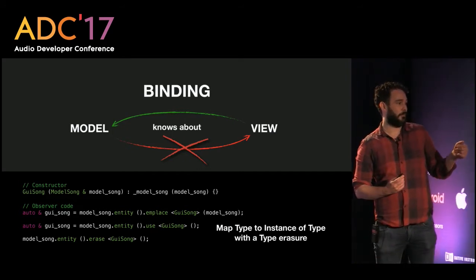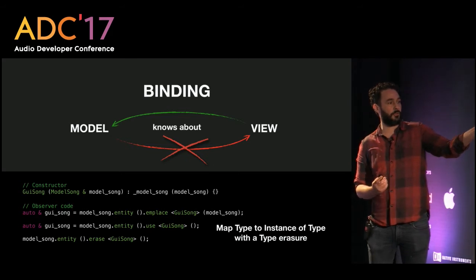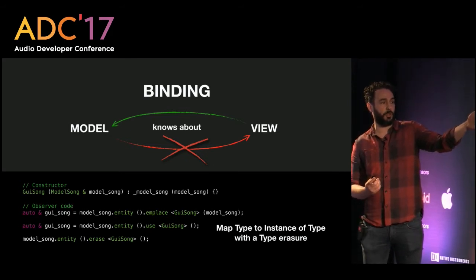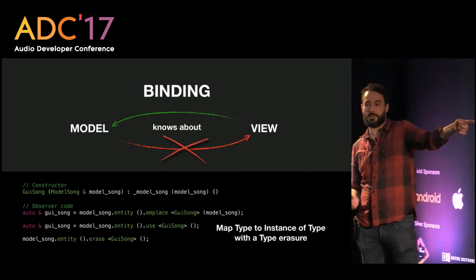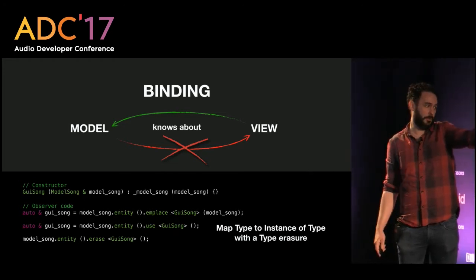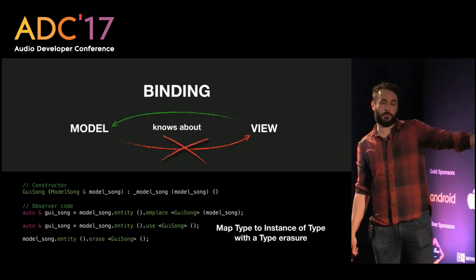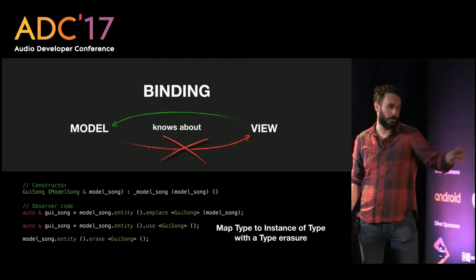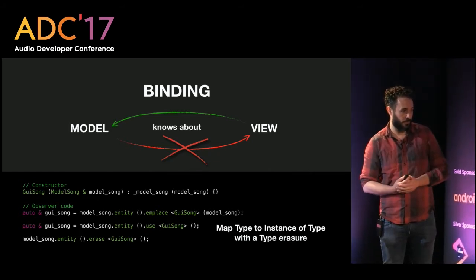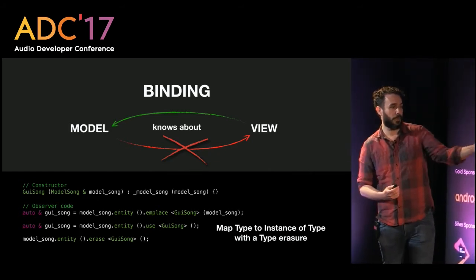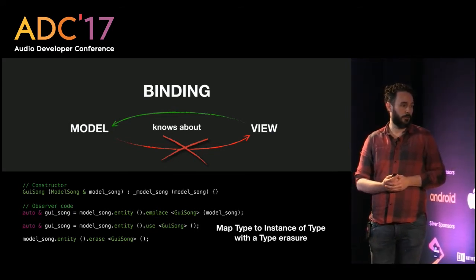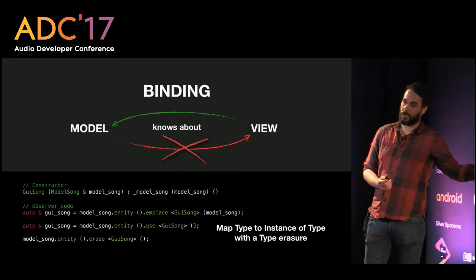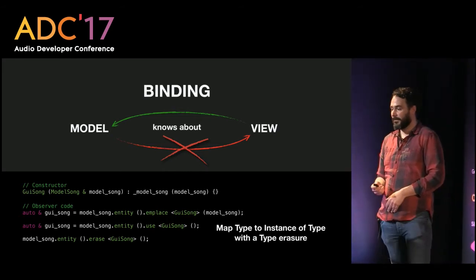In practice: from a model song, get its entity, then use 'emplace' with key GUI Song, passing the model song as a constructor parameter — that returns a GUI song object. You can also 'get' it, throw if none is found, or 'erase' it. Now let's get to the demo.